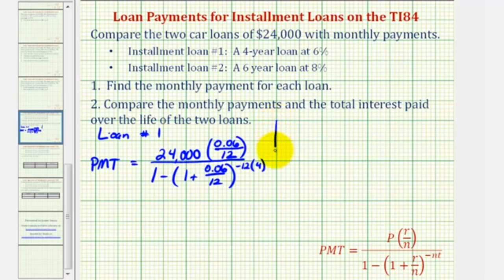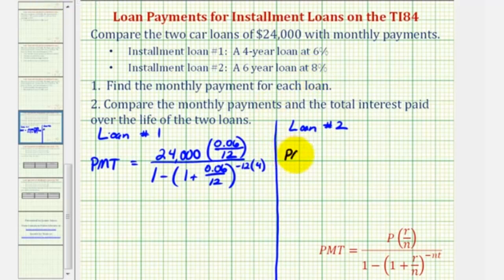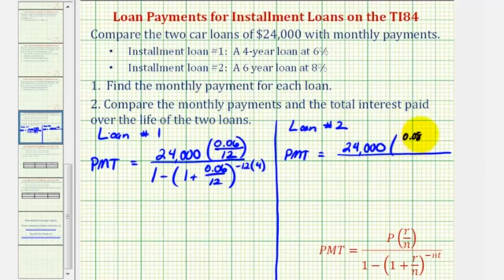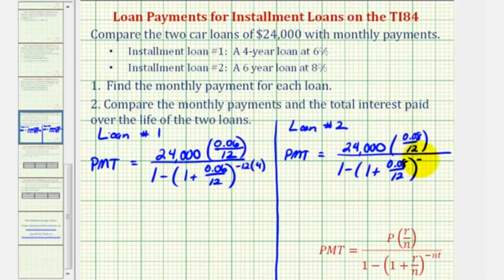Now let's set this up for loan two. The only difference is that T is six because it's a six-year loan, and R is eight percent, or 0.08. So the payment will be equal to 24,000 times 0.08 divided by twelve, divided by one minus one plus 0.08 divided by twelve, raised to the power of negative twelve times six.